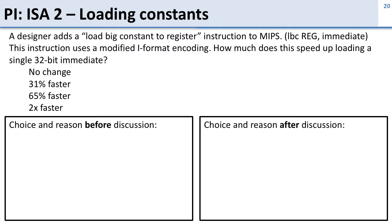Now let's take a look at loading constants. We want to make an instruction that makes it easier to load a constant. We're going to have LBC — load big constants — which takes a register and an immediate. If we defined a new instruction like this with a large immediate, how much would this speed up loading a single 32-bit immediate?